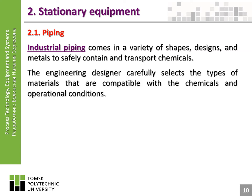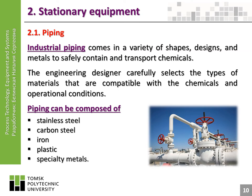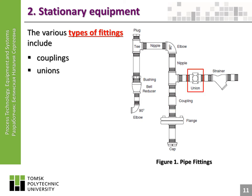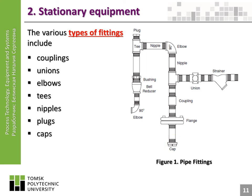Piping can be composed of stainless steel, carbon steel, iron, plastic, or specialty metals. The various types of fittings include couplings, unions, elbows, tees, nipples, plugs, caps, and bushings.